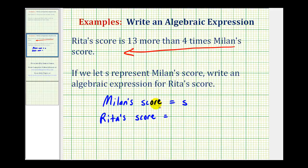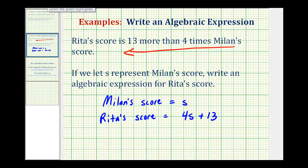Four times Milan's score, or four times s, would just be 4s. So 4s represents four times Milan's score, but we want thirteen more than four times, so our expression for Rita's score is going to be 4s plus thirteen. This is the expression that we're looking for.